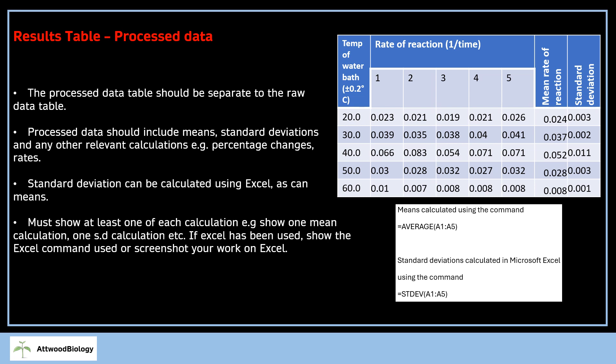After our raw data table, we've also got a processed data table. At this stage, we have done something with the data. Your processed data table is separate from the raw data table—we're not putting those together. We're not putting any processed data in with the raw data. The processed data table should include means, standard deviations at the very least, and any other relevant calculations. In this investigation, you can calculate rate of reaction, so we've got all these calculations as well as the mean and standard deviation.